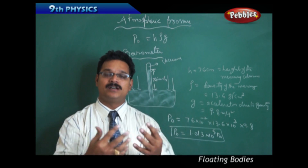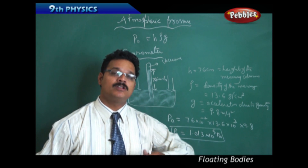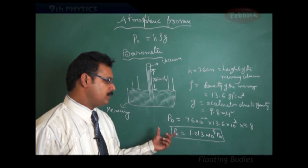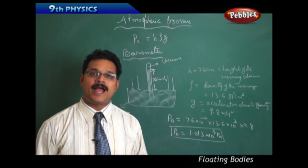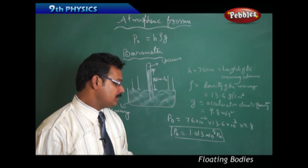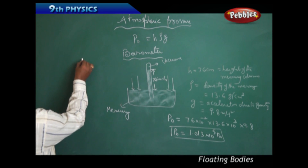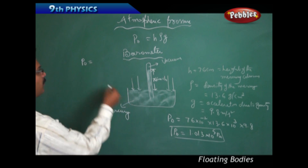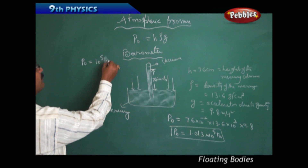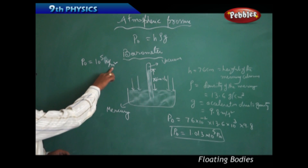This is the atmospheric pressure acting on us everywhere on Earth — whether you're walking, running, or jogging, this atmospheric pressure is acting on you. Now let me explain how large this number actually is. If P₀ is approximately 10⁵ Pascals, it is also written as 10⁵ Newtons per meter squared — meaning for one square meter, the force applied is 10⁵ Newtons.